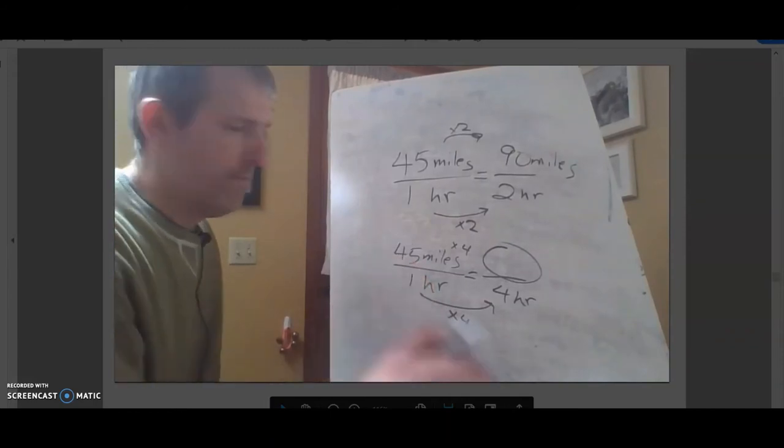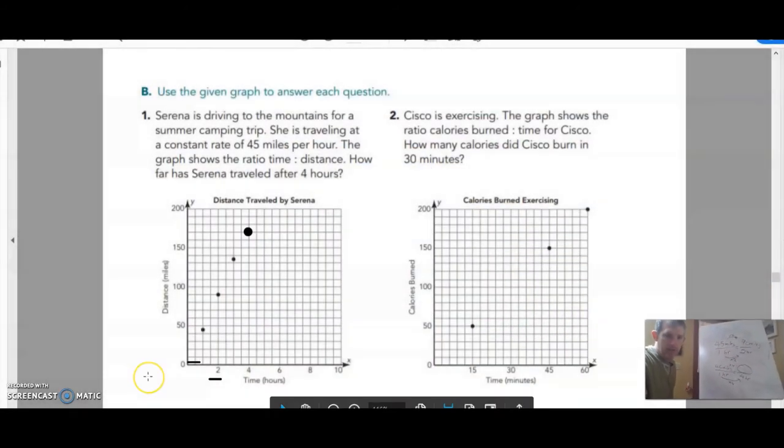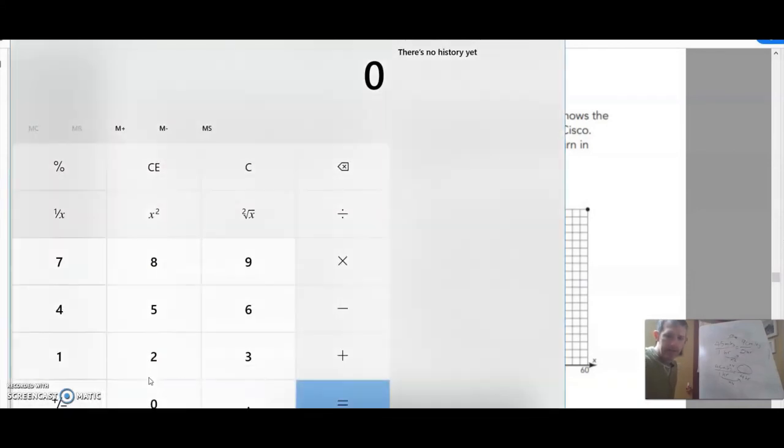To get from 45 to what my answer is, let's get our calculator. We're gonna do 45 times four, and that's going to give us 180 miles. That should be our answer. So we can do scaling up for this. Now here's another way.